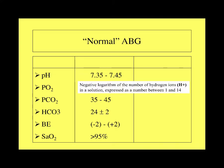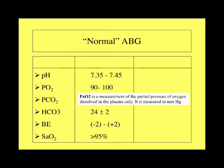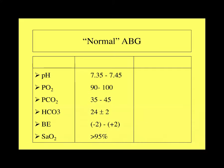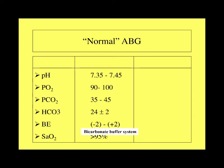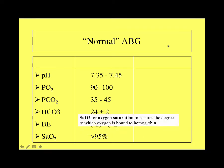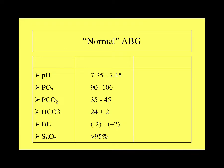pH is the negative logarithm of the number of hydrogen ions in solution, expressed on a scale from 1 (very acidic) to 14 (very basic). PaO2 measures the partial pressure of oxygen dissolved in plasma, in millimeters of mercury. PaCO2, a byproduct of metabolism, measures the partial pressure of CO2 dissolved in plasma, also in mmHg. Bicarbonate and base excess are paired as part of the bicarbonate buffer system. SaO2 is the oxygen saturation — the degree to which oxygen is bound to hemoglobin.